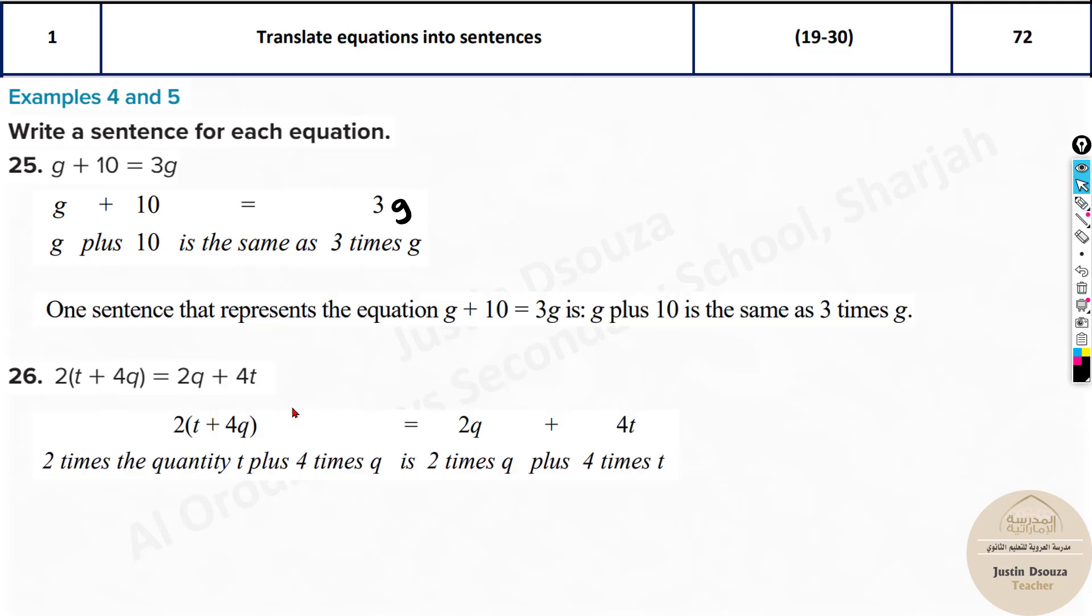There are so many methods. This is one of the simpler methods, or you can tell the sum of g plus 10 is equal to three multiplied with g, or three times g, or the product of three and g. Please make sure you read them by yourself. You can see all the answers, read them by yourself and understand that.